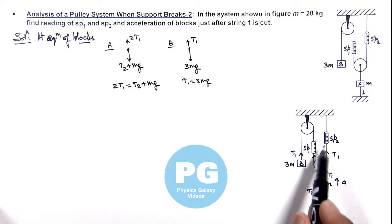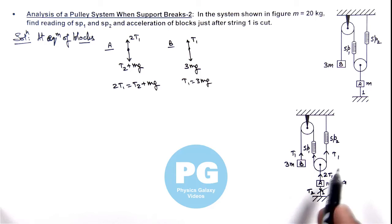So we can simply say the reading of spring balances won't change because reading changes only when there is some displacement in the strings connected to the spring balances. Here due to inertia of blocks A and B initially, just after cut these will be at rest and they start moving from rest.